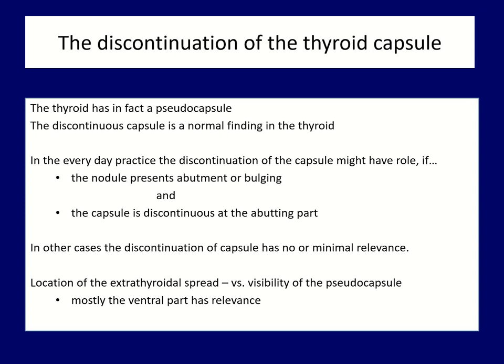The thyroid capsule is presented in the form of an echogenic line running ventral to the thyroid. Unfortunately, the thyroid does not have a real capsule, only a pseudo-capsule. This pseudo-capsule does not cover the entire thyroid gland; it only connects the thyroid to other organs of the neck. Consequently, a discontinuous pseudo-capsule is a normal finding. Extra-thyroidal spread can be raised if the capsule is discontinuous and the contour is abutting. Due to anatomical reasons, it is very difficult to judge the capsule at the lateral and dorsal part of the thyroid, while due to technical reasons, this is almost impossible in the medial part where the trachea runs.